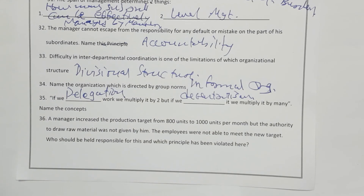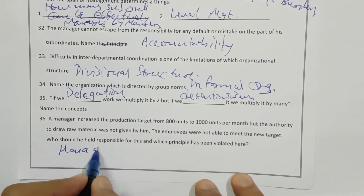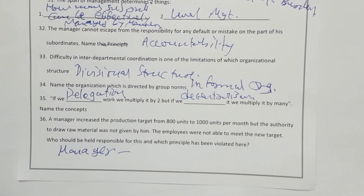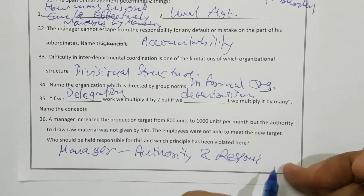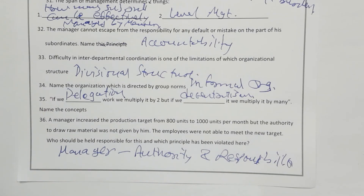A manager increased the production target from 800 to 1000 units per month, but the authority to draw raw material was not given to meet the target. Who should be held responsible, and which principle has been violated? Obviously the manager is responsible, because when giving responsibility you must also give authority at the same level. There is no balance between authority and responsibility here — there should be a balance between authority and responsibility, then only can the person achieve the target.